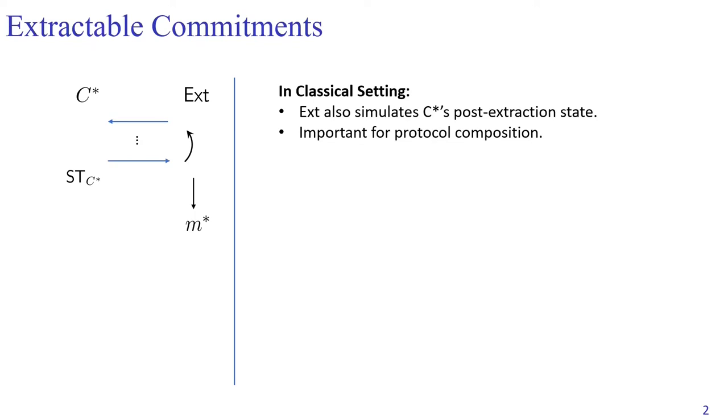For a classical protocol, this is usually easy to do, because the extractor can just pretend to be the honest receiver to execute the protocol with C star. Then the extractor can rewind C star back to the beginning of the execution and start the extraction procedure.